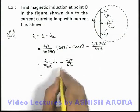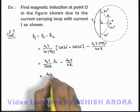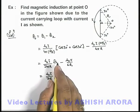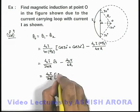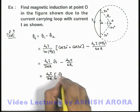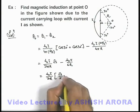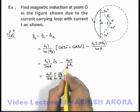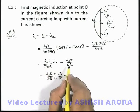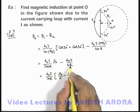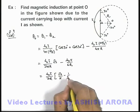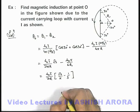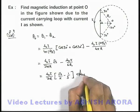So on further simplifying we can write, if we take μ₀I by 2r common, the result inside can now be written as √3 by π minus 1 by 3. In this situation I have taken this 2r common out, and here the remaining term will be 3. So this is the result I am getting as a final answer for this problem.